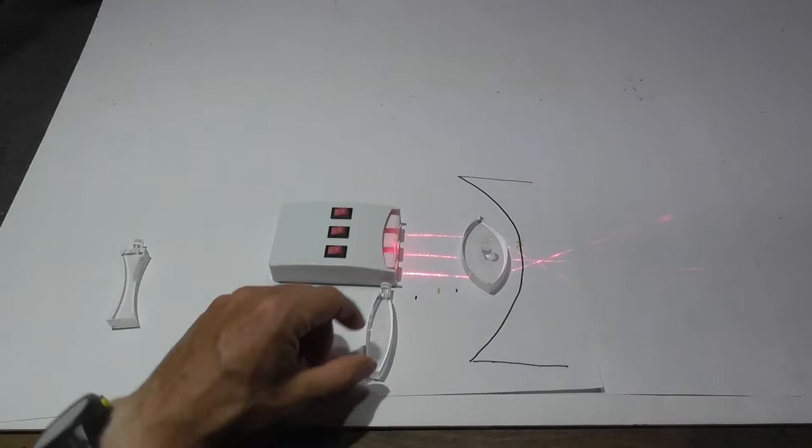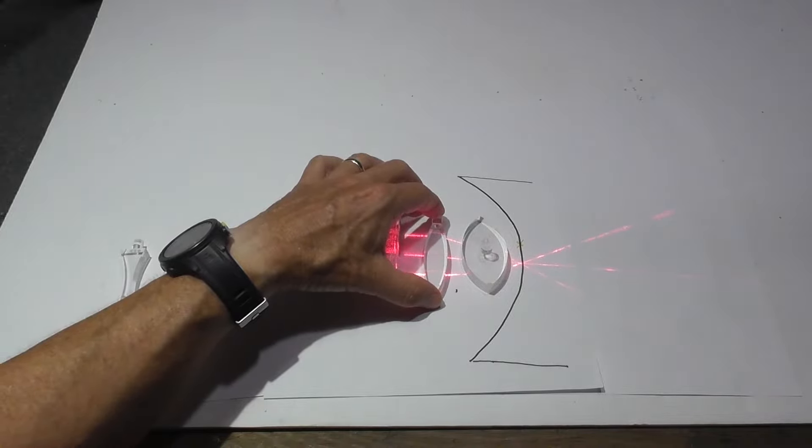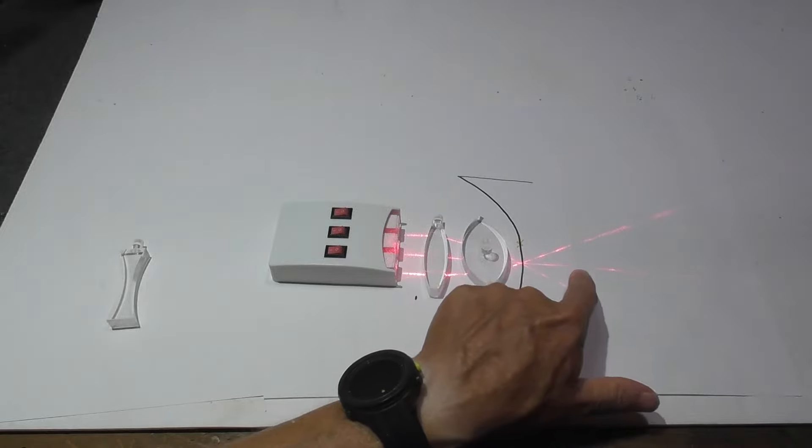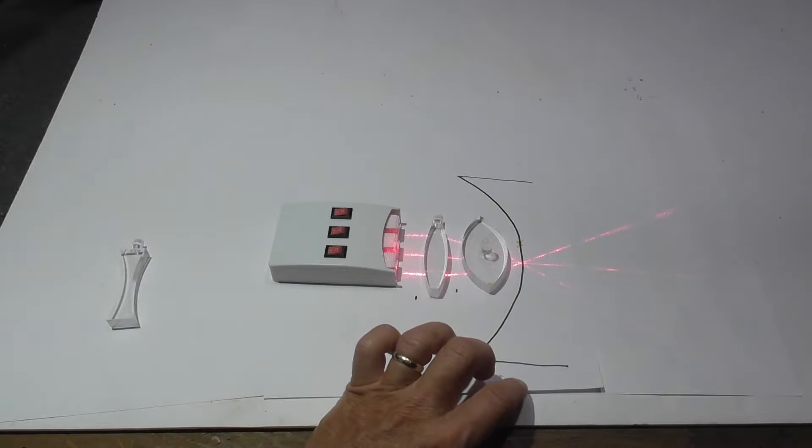So I'm going to use this convex lens, and you can see when you place it here, it corrects the focal point. Now the focal point is sitting right on the retina. As a result, objects far away can be seen clearly and objects nearby can also be seen clearly.